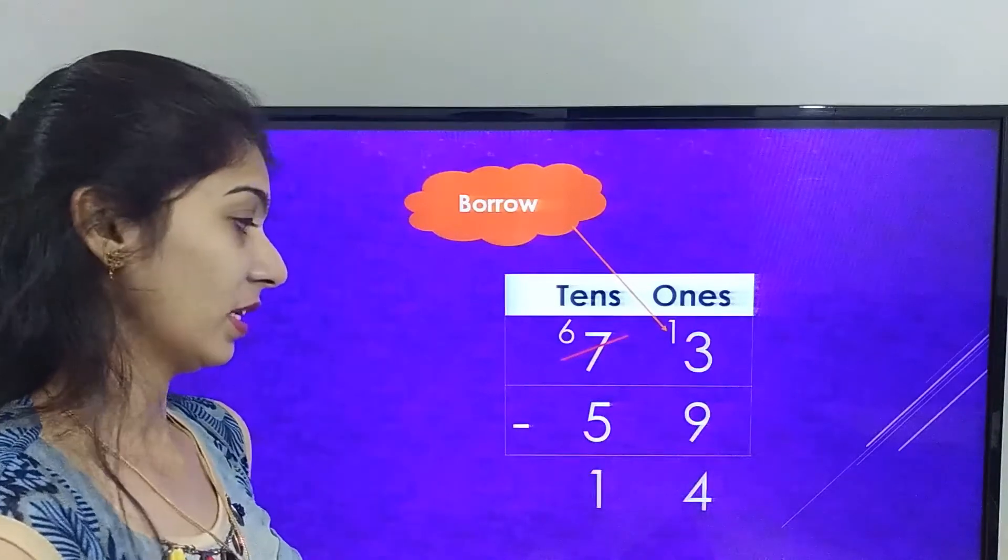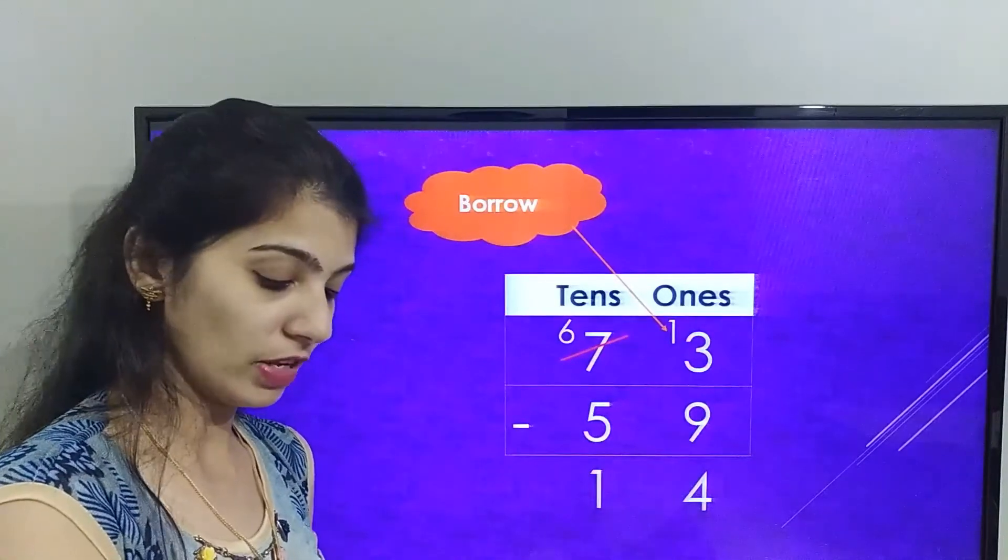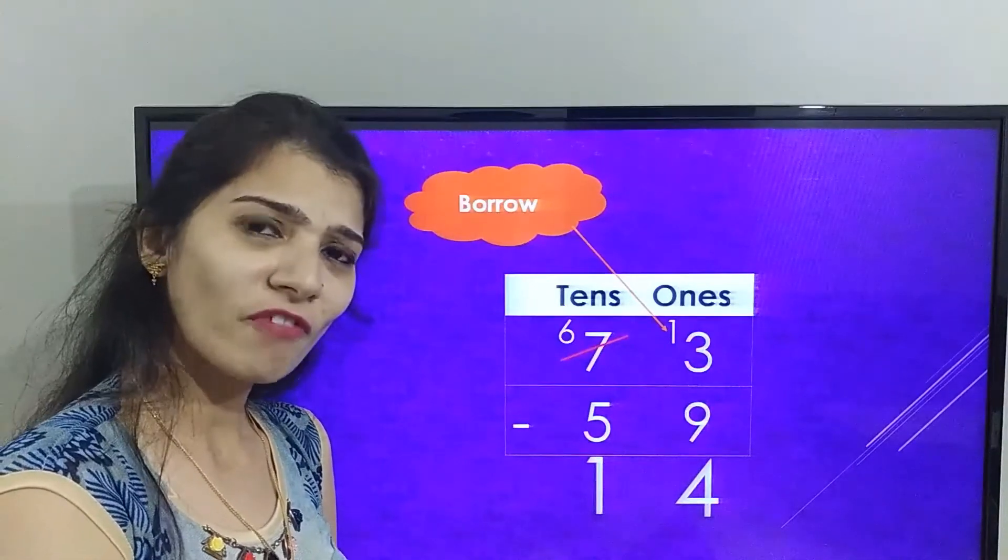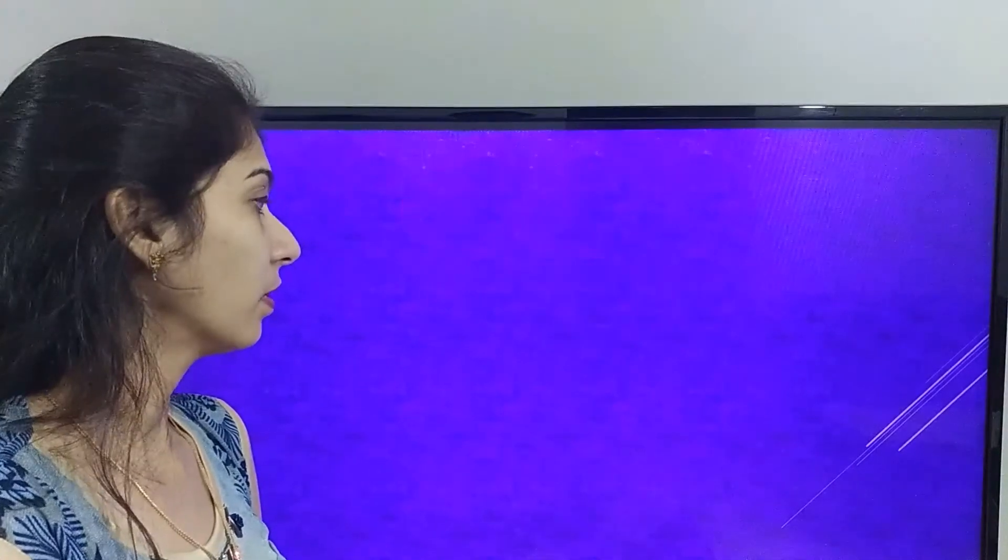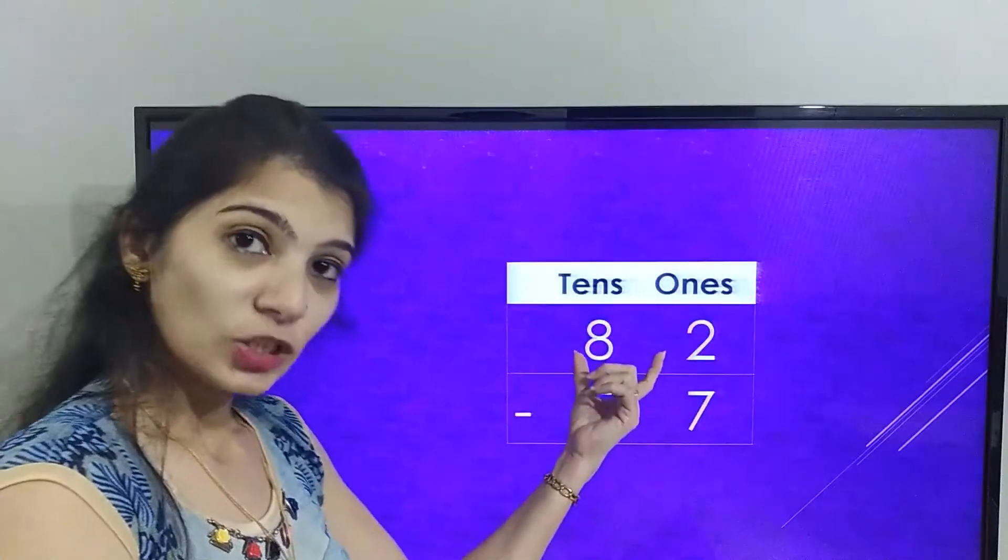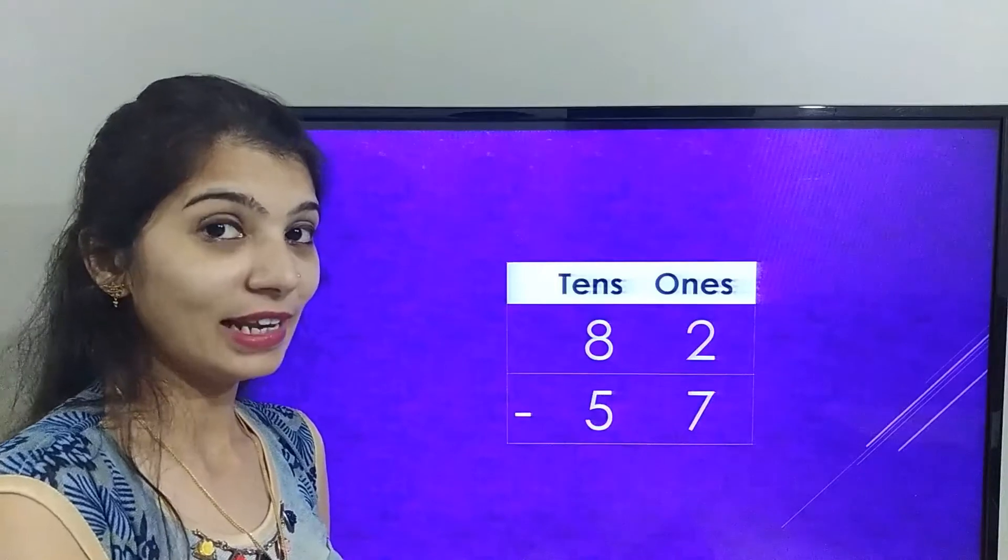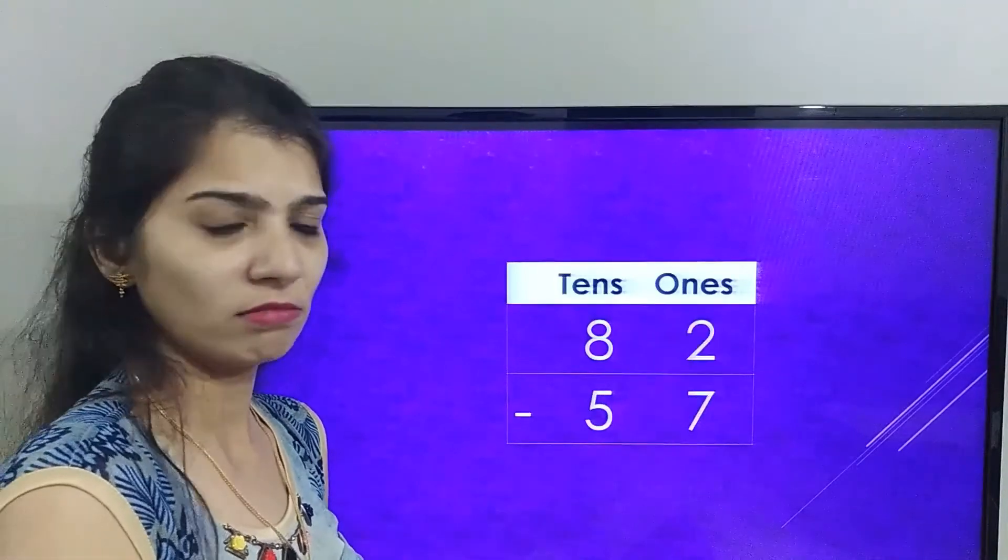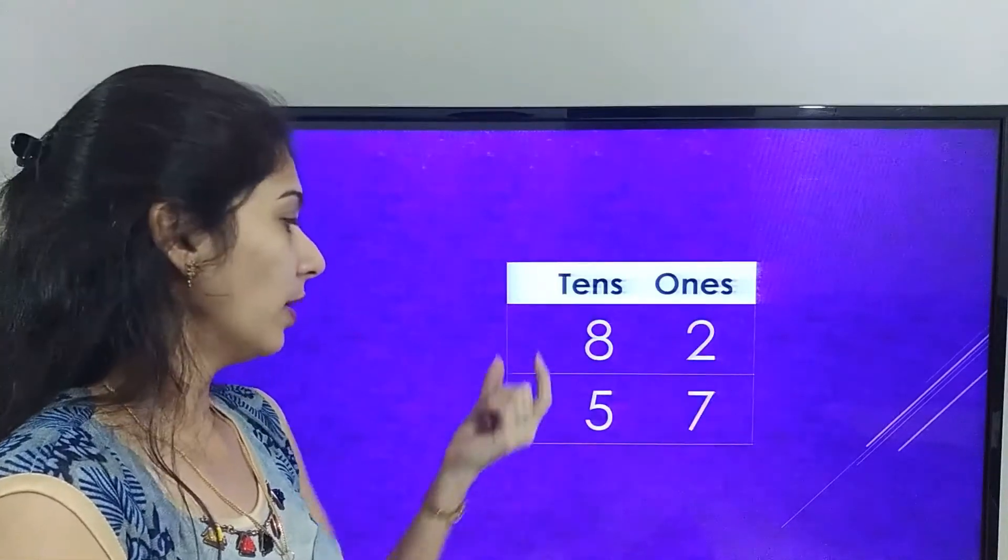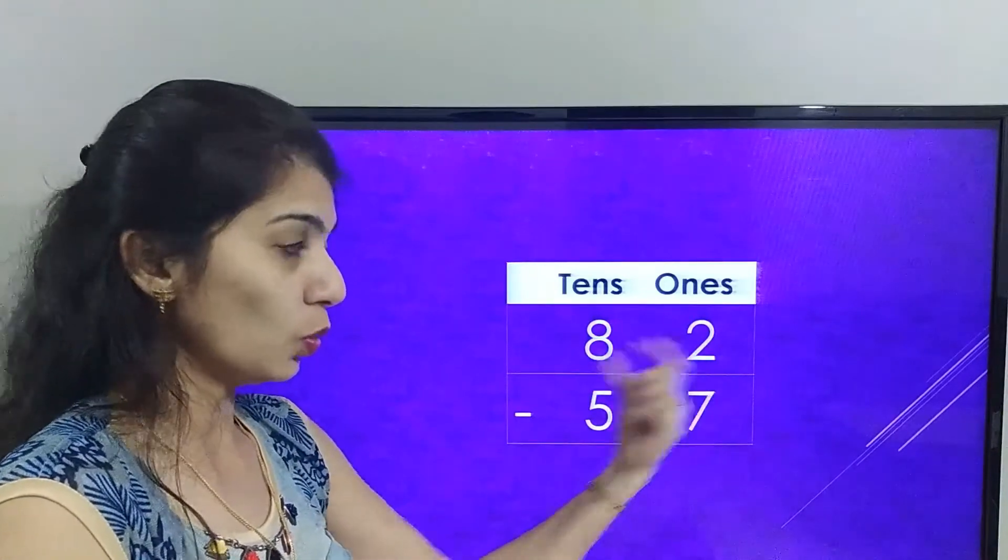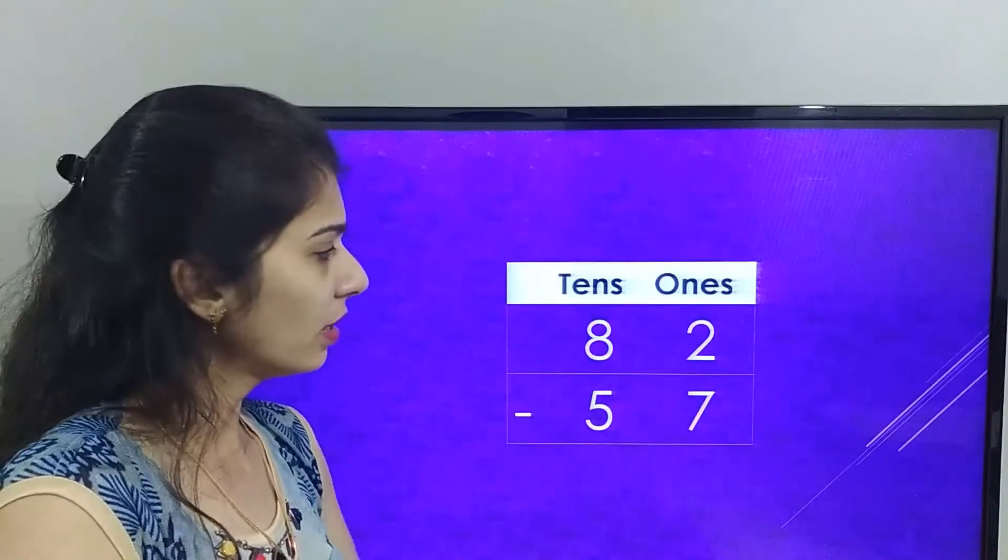Now let's solve one more sum, that is 82 minus 57. Let's solve the ones place, that is 2 minus 7. Again, 2 is a smaller number and 7 is a bigger number. We cannot minus bigger number from smaller number.